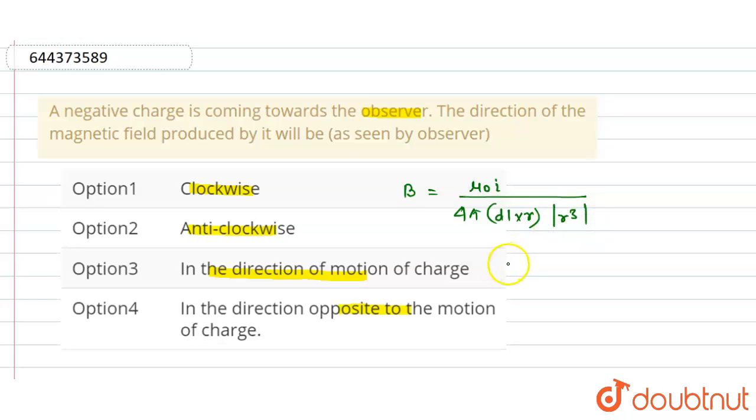We see that B is in the direction of I DL cross R. The charge is negative and current I equals minus Q DT.